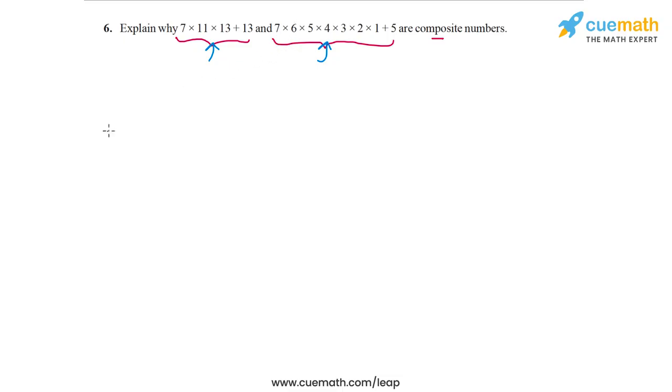Let's take the first expression, which is 7 times 11 times 13 plus 13. What is special about this expression? Well, it's a sum of two terms and there's a factor of 13 which is common in both the terms.